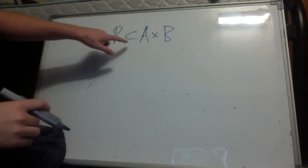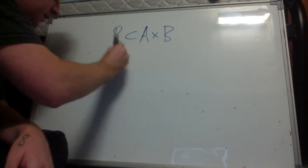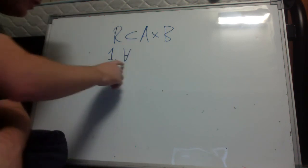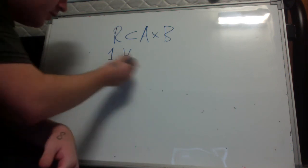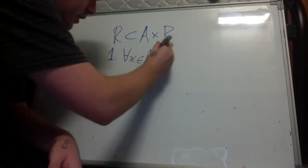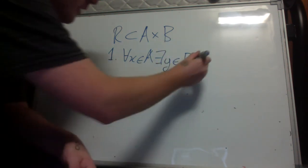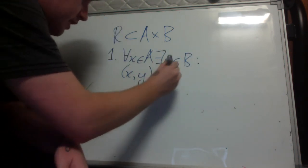Now if r is a subset of a cross b, and the following two conditions hold. Condition one. There's a video that I've done on universal and existential quantifiers. You might want to look into that, or just google it. For all x element a, there exists some y element b, such that the ordered pair x, y is an element of r.